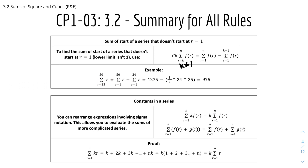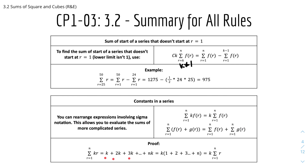We can also rearrange expressions involving sigma notation — this allows us to evaluate sums of more complicated series. For example, we can take out a constant or split up two functions. Here's a proof: the sum of kr from r equals 1 to n equals k plus 2k plus 3k plus ... plus nk. We factorize k out to get k times the sum of r.